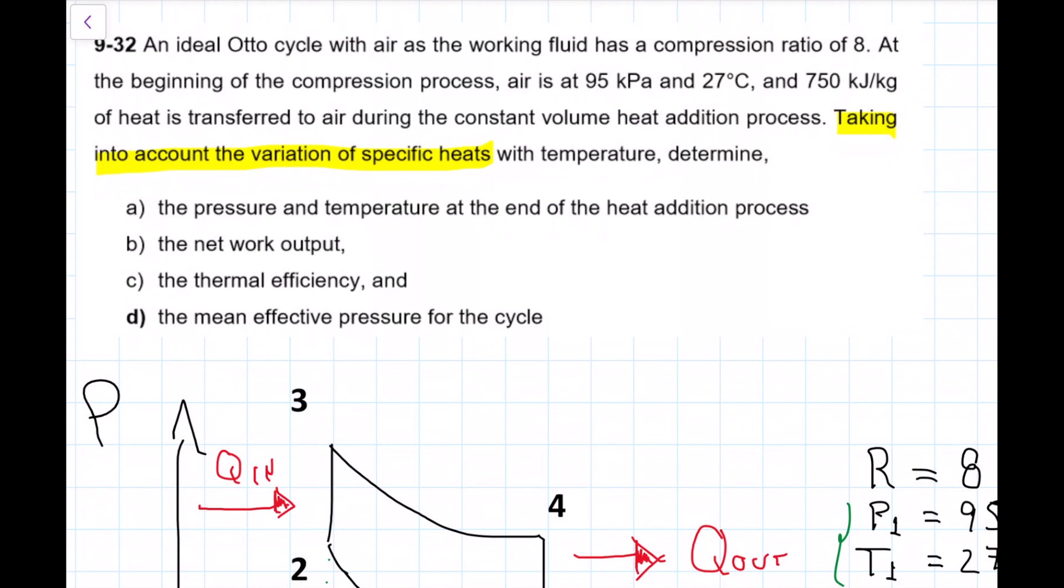Take into account the variation of specific heat with temperature, determine: a) the pressure and temperature at the end of the heat addition process, b) the net work output, c) the thermal efficiency, and d) the mean effective pressure for the cycle.